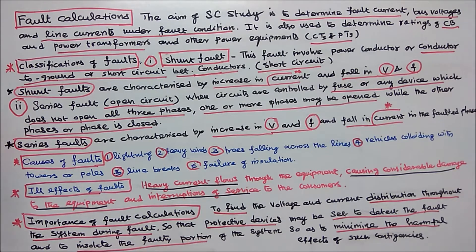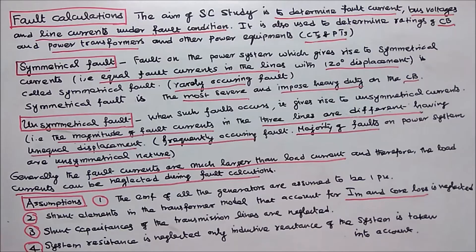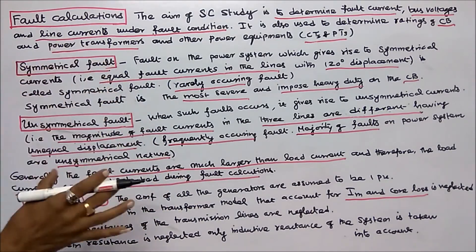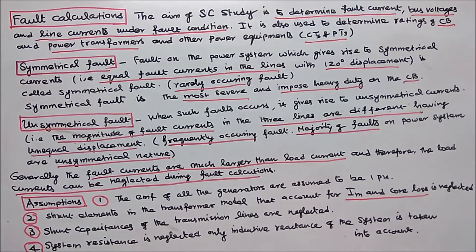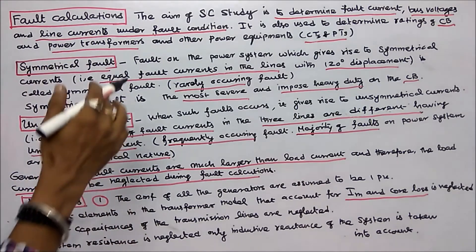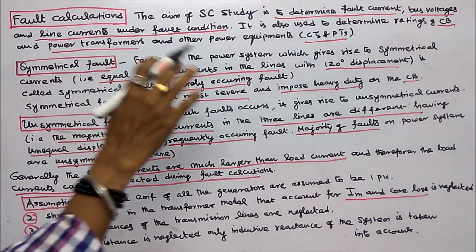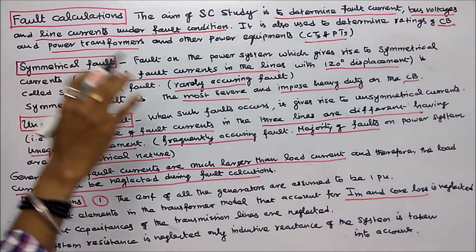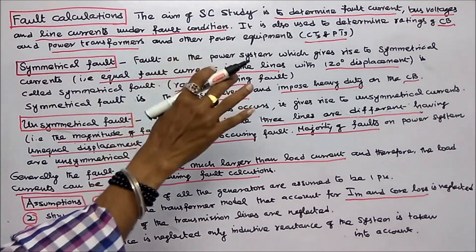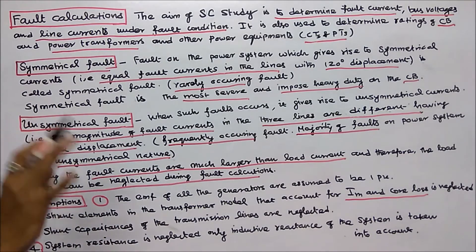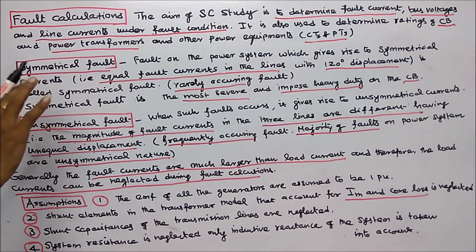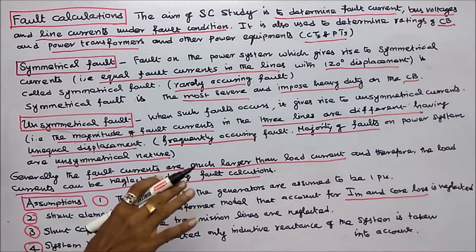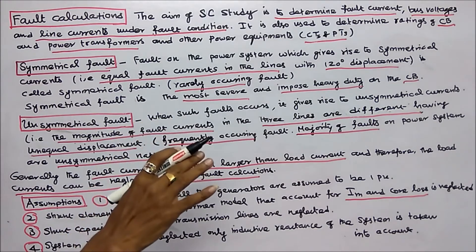In power systems, faults are classified as symmetrical fault and unsymmetrical fault. Symmetrical fault means fault on the power system which gives rise to symmetrical currents, that is equal fault currents in the lines with 120 degree displacement. Symmetrical fault is a rarely occurring fault. Symmetrical fault is the most severe and imposes heavy duty on the circuit breaker.